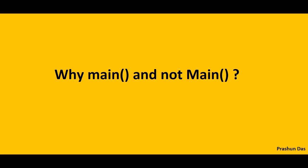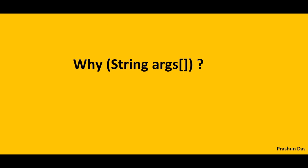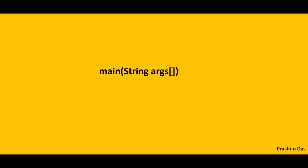Java is case sensitive, hence 'Main' with an uppercase M is different from 'main' with a lowercase m. The compiler will compile all the classes without the main method, but the interpreter has strict instructions to run these classes only when the main method with a lowercase m is present.